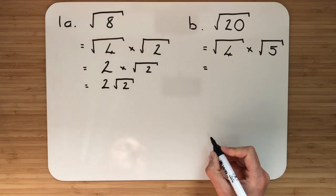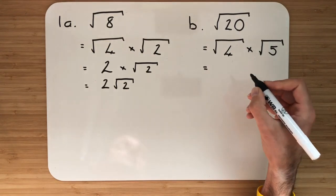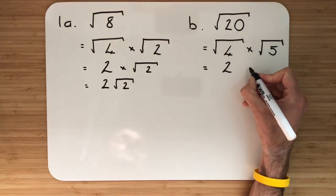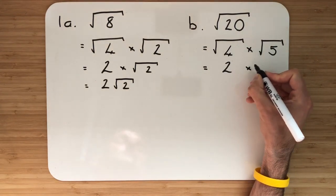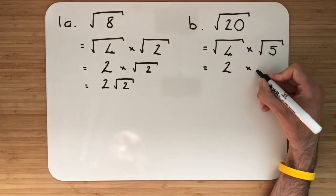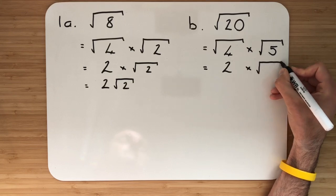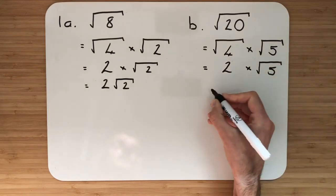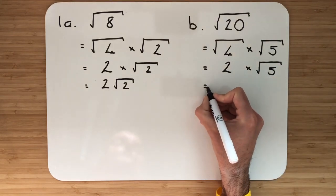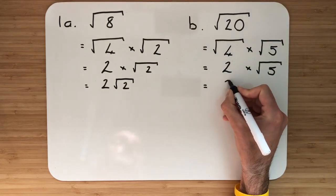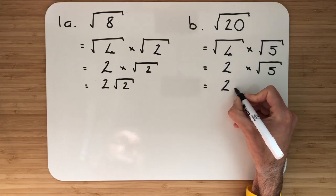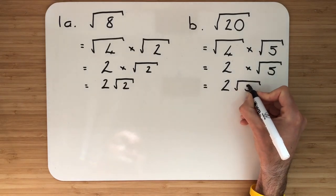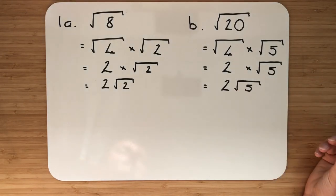From there, simplify down — the square root of 4 is 2. We cannot simplify root 5 down, so that stays there. And we finish off writing the answer as 2 root 5.